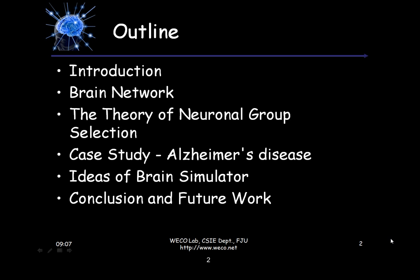So this is the talk outline. First, I'll give you an introduction. Second, I'll give you a brief introduction of our brain networks — there are three types of brain networks. And then I'll focus on the theory of neurogroup selection.